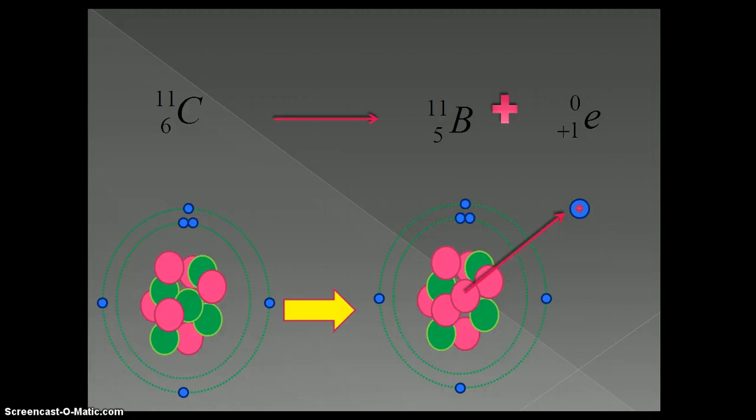As you can see, we have lost a proton, which has turned into a neutron, and also a positive electron is released. Let me repeat that. A proton has been lost, yet we've gained a neutron, and a positive electron has been released.